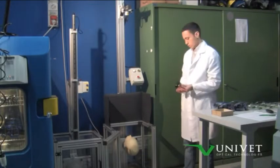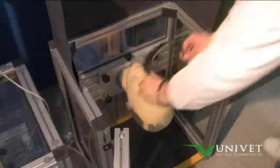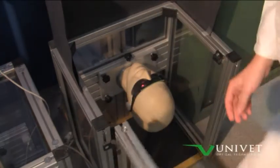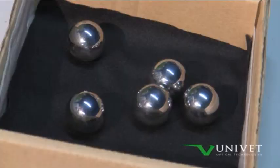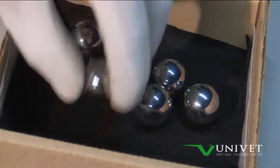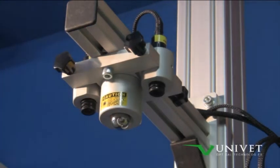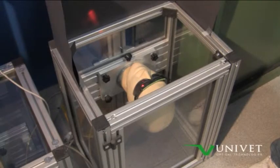This test requires the fall of a steel ball from a height of 130 cm, striking the eye protector on the optical centers and on side protection. After the impact, there must be no fracture or deformation of the lenses and the frame.